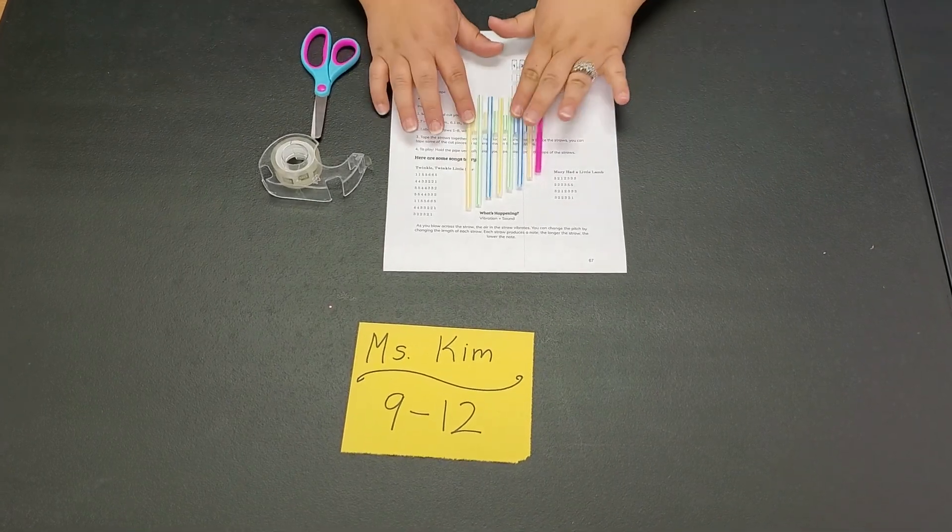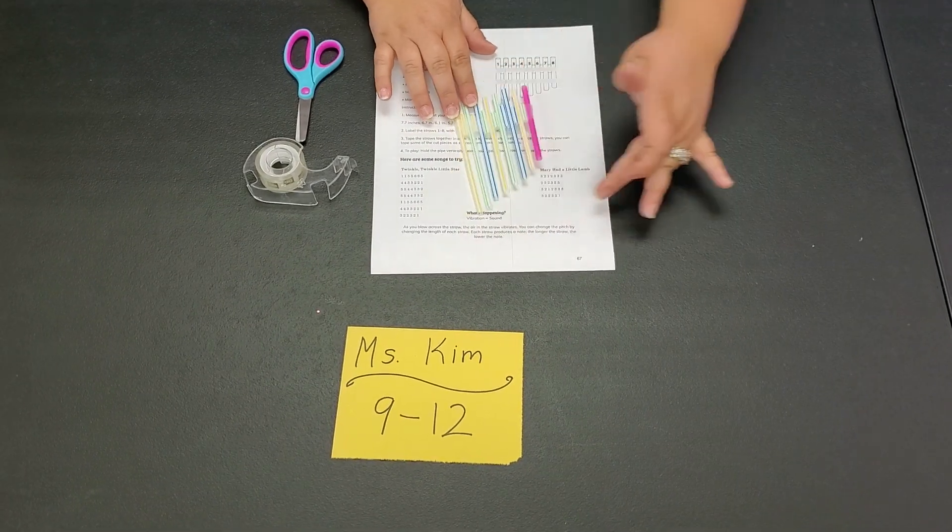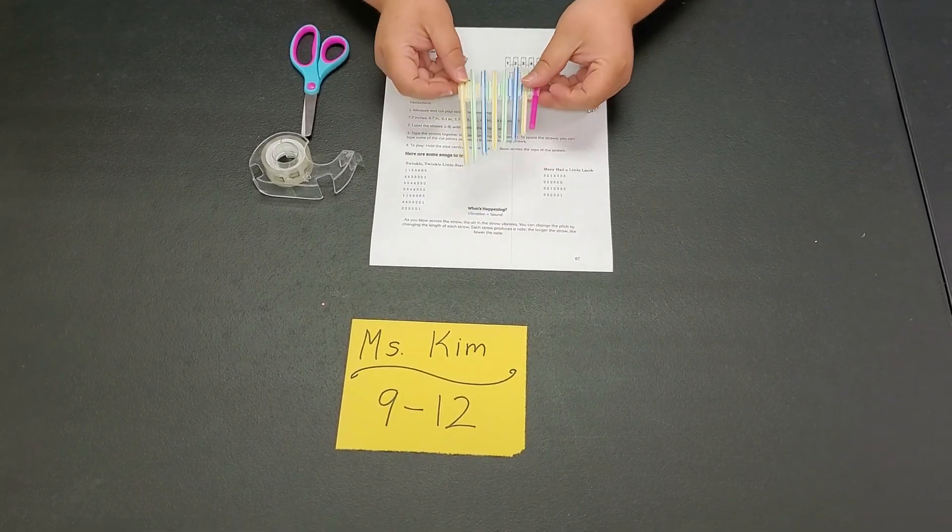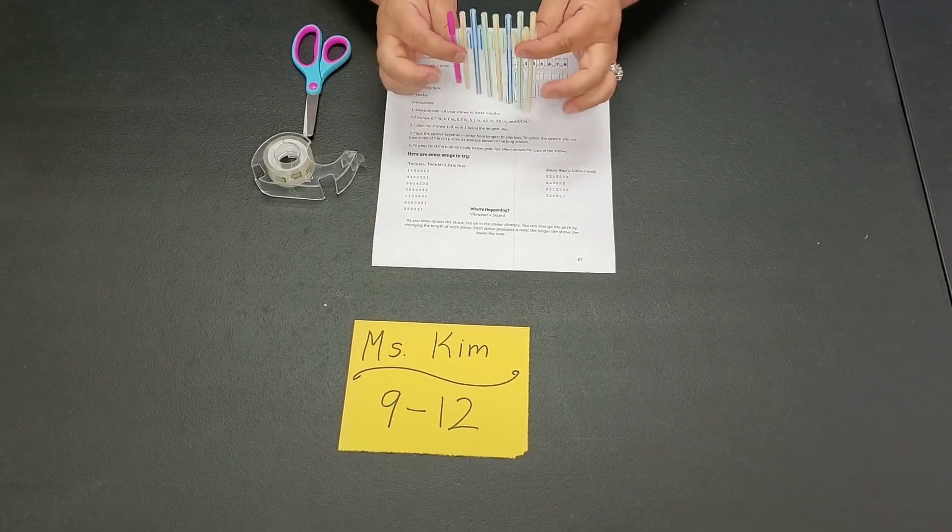There you go. I put mine together with my tape and little straw pieces in between my straws. I have cut my straws down at the bottom and you will blow into the tops of this and you can hold it either way.